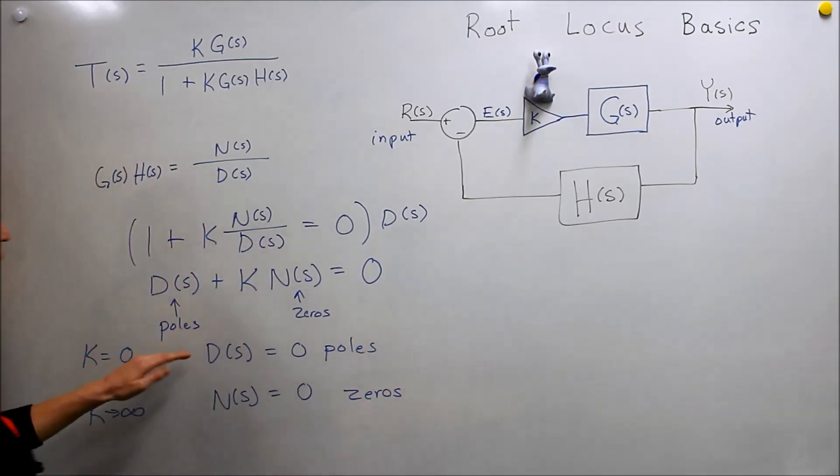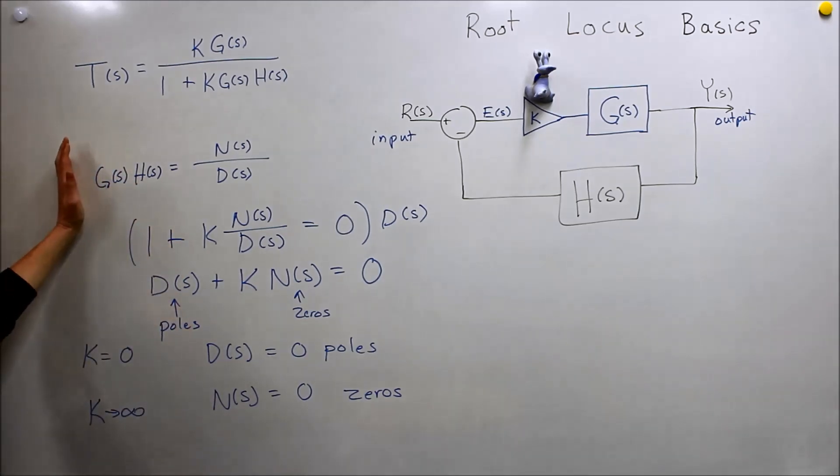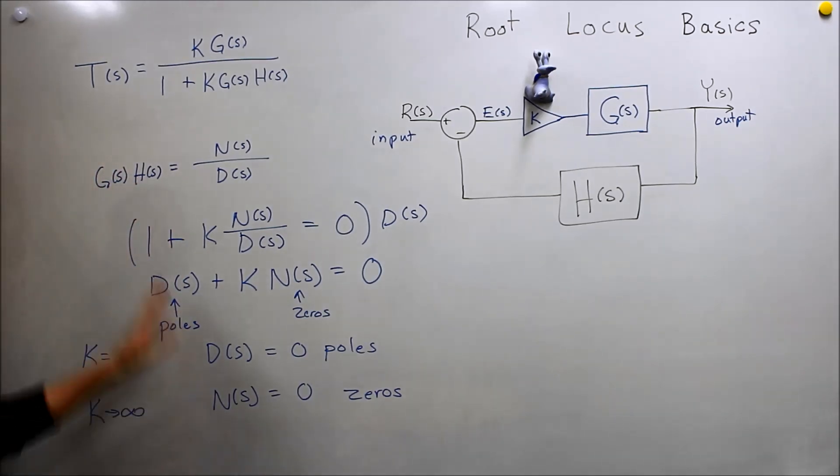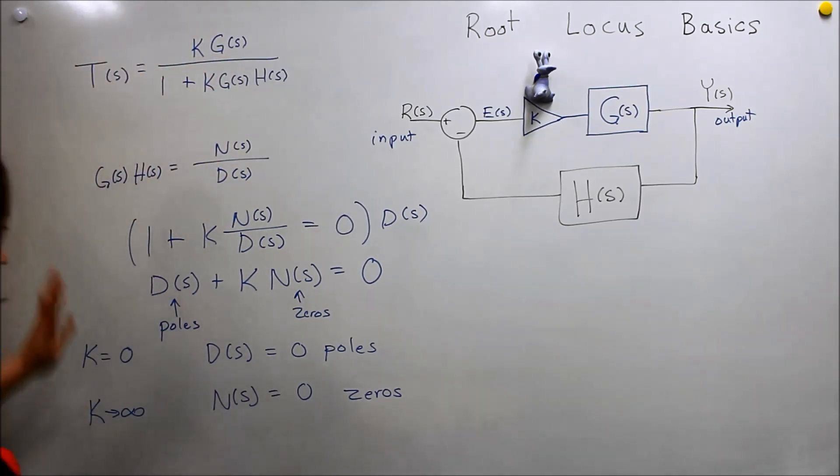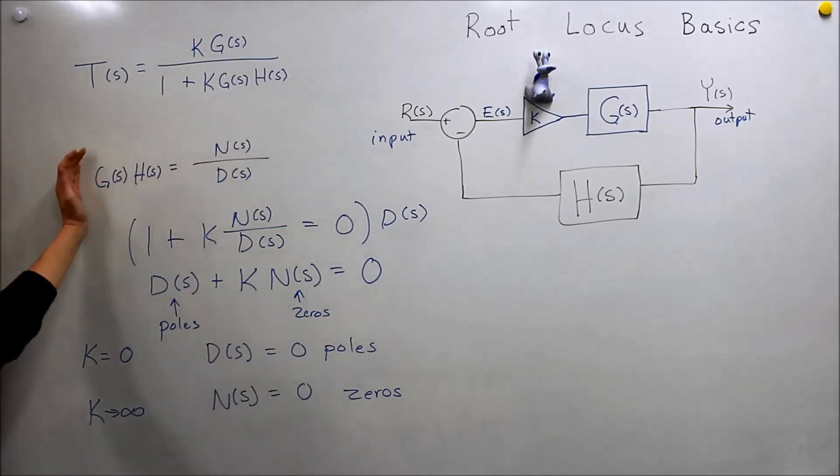The other example we gave, these are the poles of our GH here, and these are the zeros. In a sense, if K is zero, the poles of this thing are our closed-loop poles. And if K is infinitely high, the zeros of this system become our closed-loop poles.